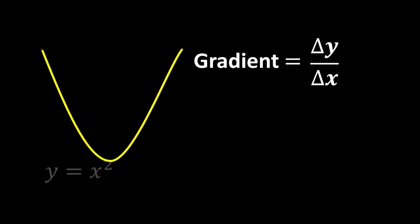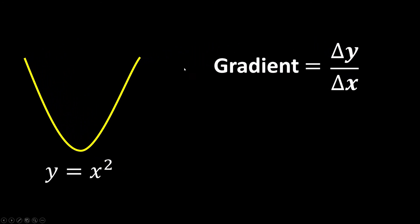Now I'm curious to find the gradient at a specific point. But we just mentioned that in order to find the gradient, we need at least 2 points. So how is it possible for us to find the gradient at a specific point? Let's see.